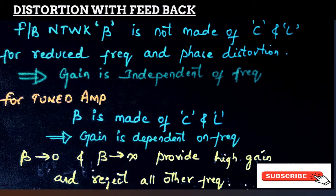If the feedback network is not made of reactive elements like capacitors and inductors, the overall gain of the feedback amplifier will be independent of frequency, and phase and frequency distortions can be substantially reduced. However, sometimes the feedback network is made of reactive elements — C and L — for tuned amplification. Since β depends on frequency when made of C and L, the gain will depend on frequency, and as β tends to 0 or infinity at certain frequencies, the gain will be high at those frequencies, rejecting all others.